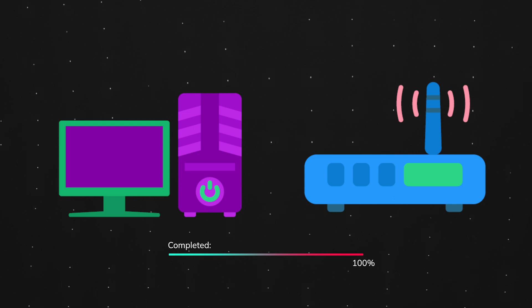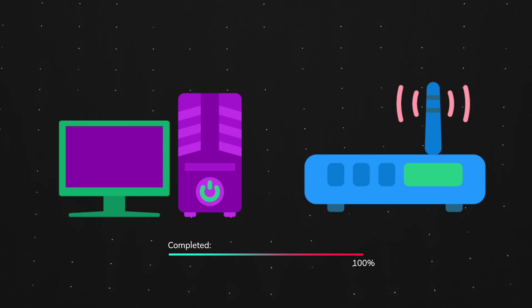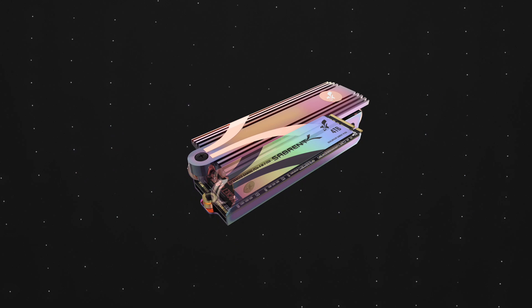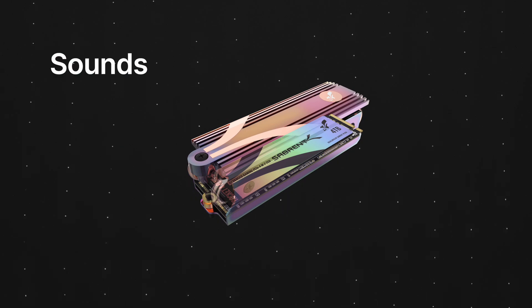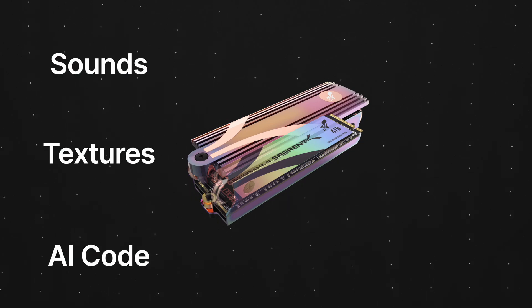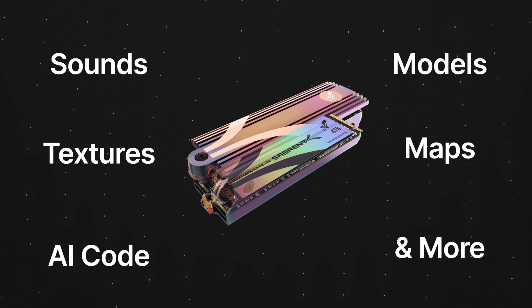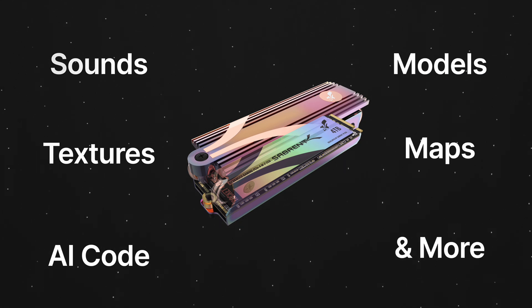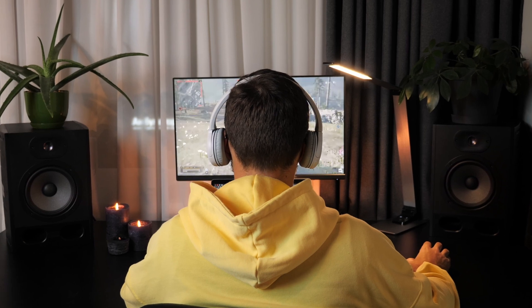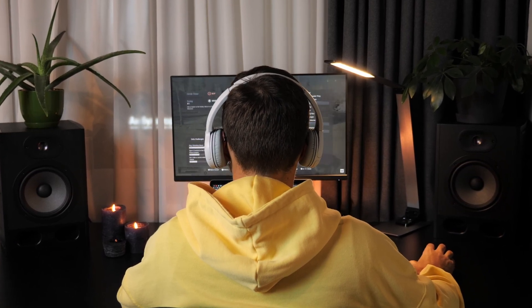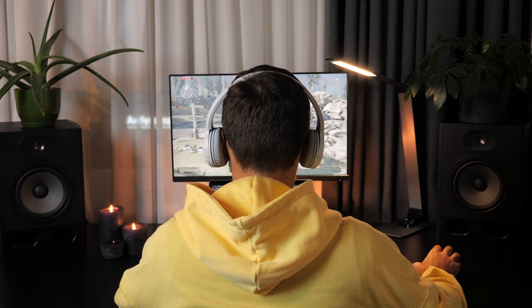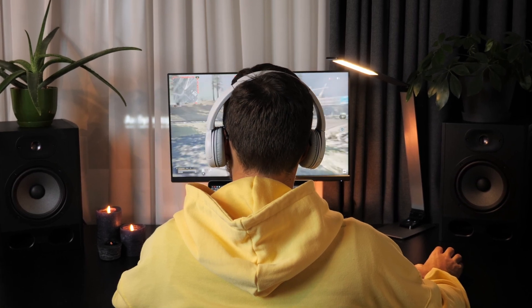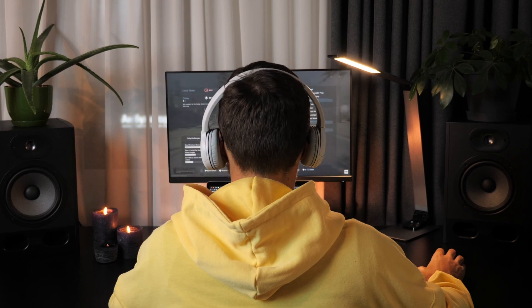To understand how Direct Storage works, we first have to understand how storage is utilized in a video game. Whenever you download a video game from the internet, all the files needed to run it are placed in your storage device. This includes assets like sounds, textures, AI code, models, maps, and all other accompanying files. When you are running a video game, these files need to be accessed by your computer, and the faster your computer can access and read these files, the faster the game will load and the smoother the experience will be.